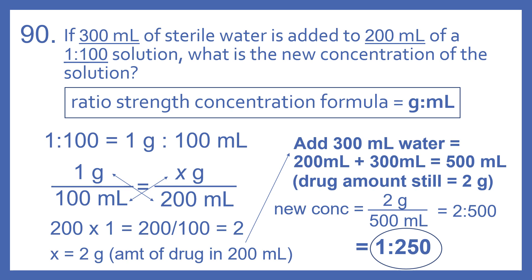The drug amount is still going to be 2 grams — we've just increased the water amount. So our new concentration is 2 grams per 500 milliliters. If we reduce that, we can divide both by 2, which leaves us with a concentration of 1 to 250.